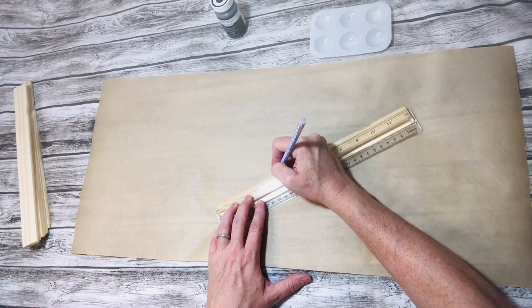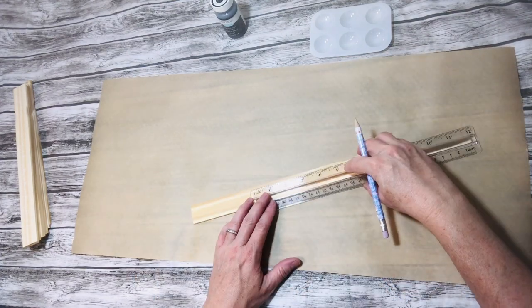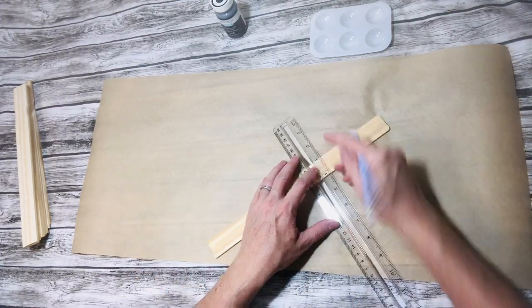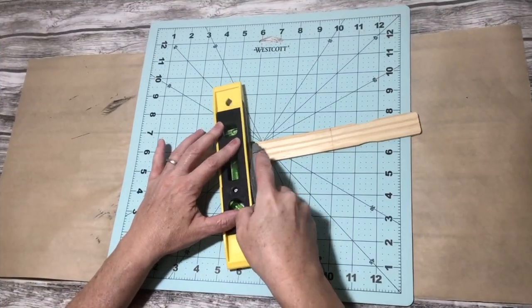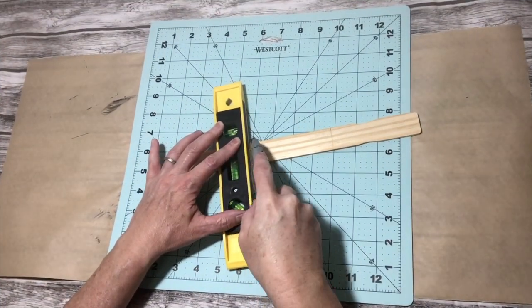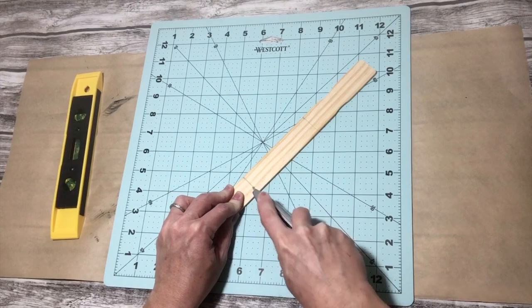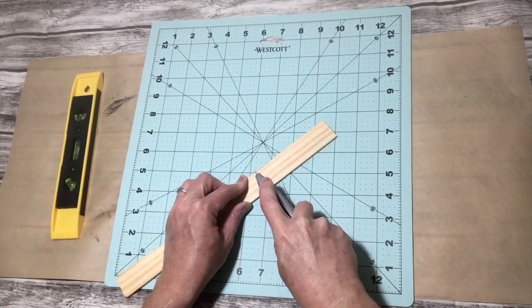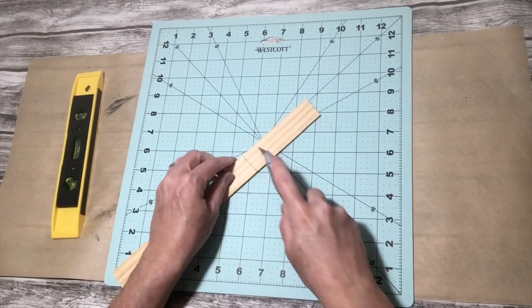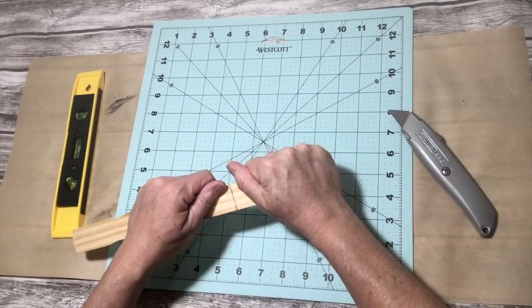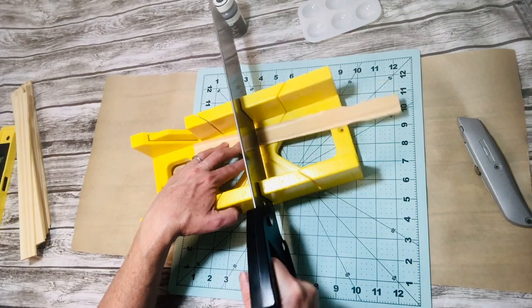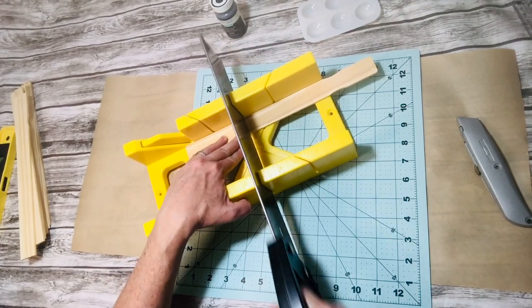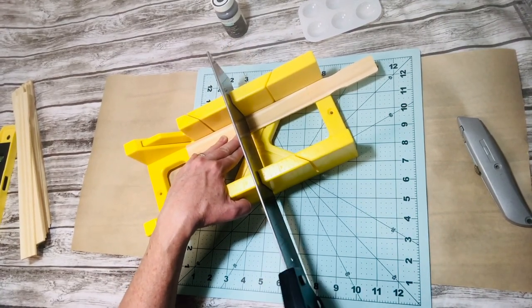I'm just measuring the sticks to four inches for mine, but of course you can make yours whatever size you need. You can score these on each side a few times and they break really easily. You can also cut these with a saw and a miter box, and this didn't take much effort either.